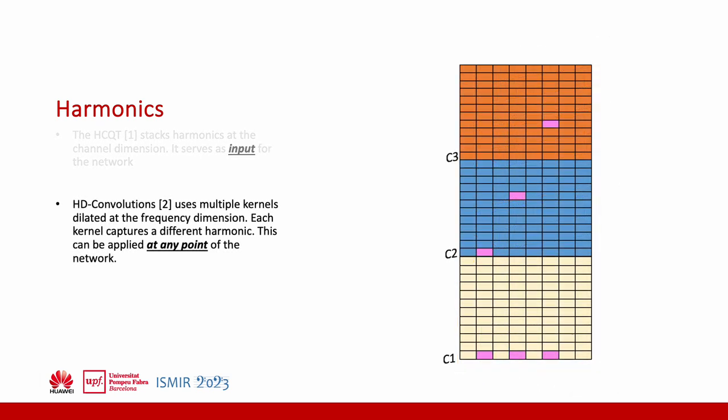Recent research dealt with carefully designed neural network operations so that it is enforced to capture the information of the harmonics. One example, these are the harmonically dilated convolutions that by using multiple kernels, each one with different dilations, each one captures a different harmonic, such as the second one, the third one, or the fifth one. Note that it requires a different kernel for each harmonic.